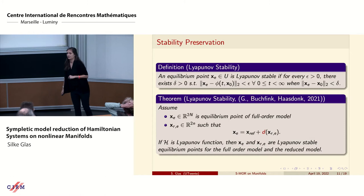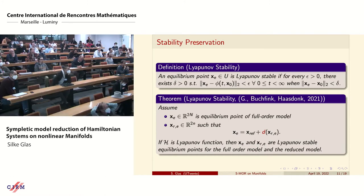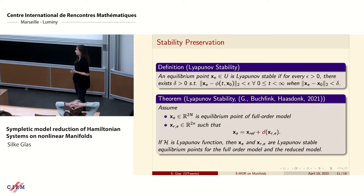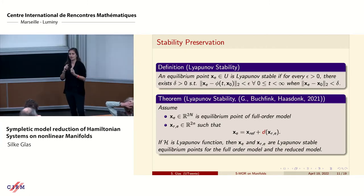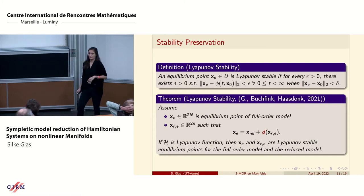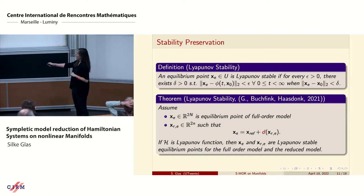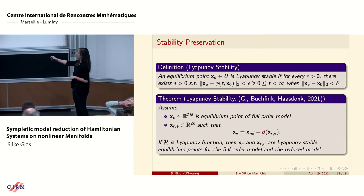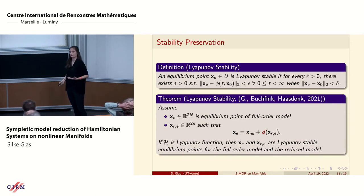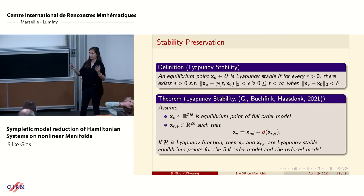We can also show stability preservation in the sense of Lyapunov stability: if we have an equilibrium point of the dynamical system and a nearby point, Lyapunov stability means the trajectory stays close to the equilibrium. By choosing the Hamiltonian as the Lyapunov function, we can show there is an equilibrium point in the high-dimensional space, and by choosing the reduced equilibrium point in the corresponding fashion, it is also an equilibrium point of the reduced Hamiltonian system.